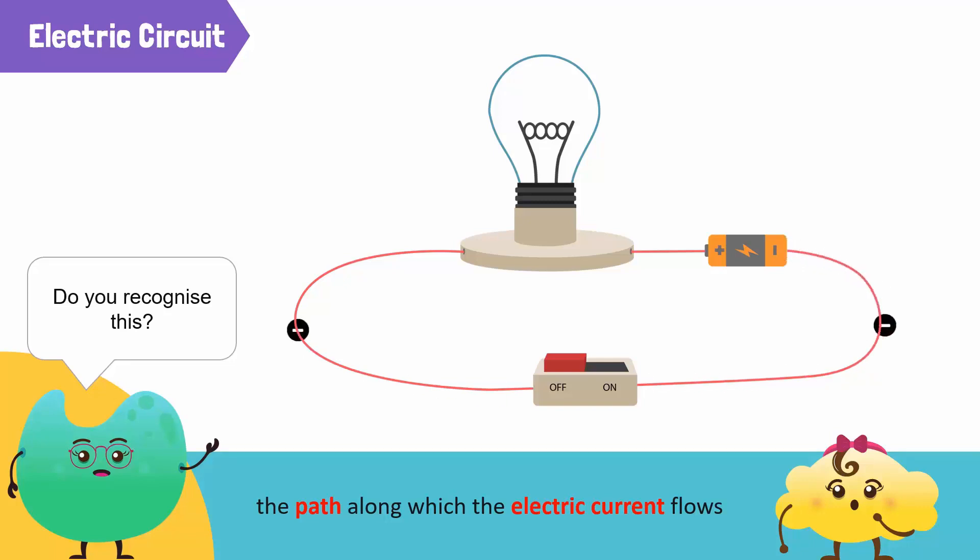An electric current, in turn, is made up of electrons flowing through a conductor.